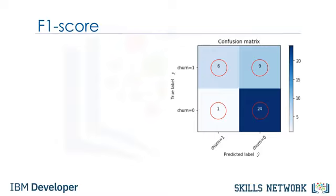A good thing about the confusion matrix is that it shows the model's ability to correctly predict or separate the classes. In the specific case of a binary classifier, such as this example, we can interpret these numbers as the count of true positives, false negatives, true negatives, and false positives.